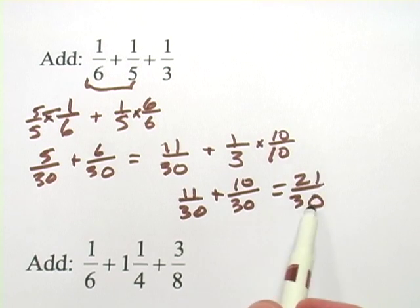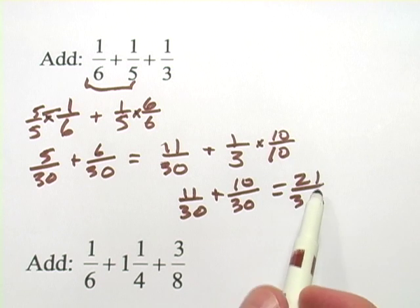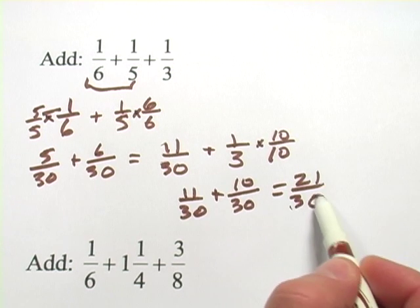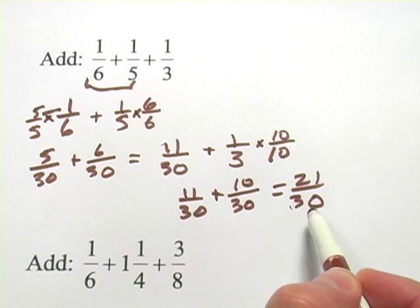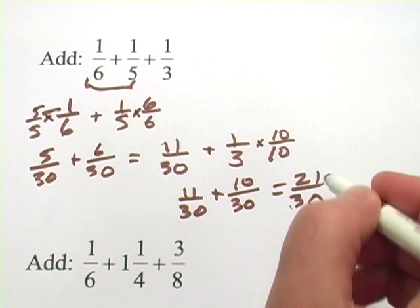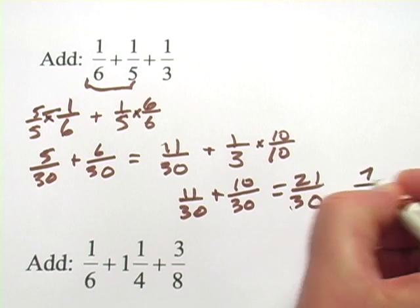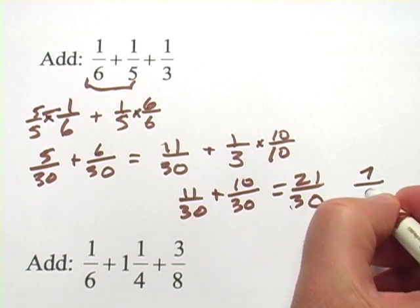And I might be done, but I should check. Can I reduce this fraction? Can it be simpler than it is? And looking at these, I think the top and the bottom can each be divided by 3. 3 times 7 is 21. So let's divide that by 3. And 30 divided by 3 would be 10.